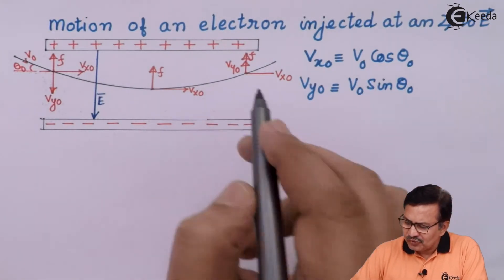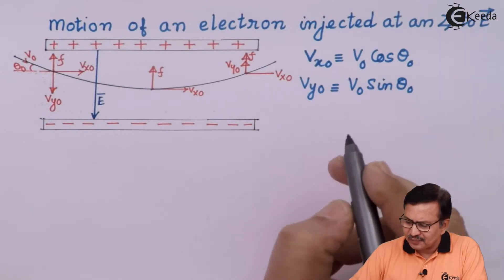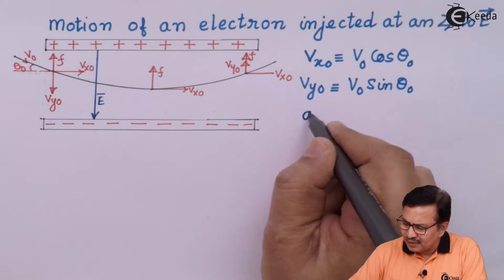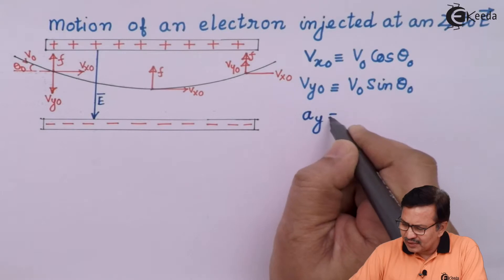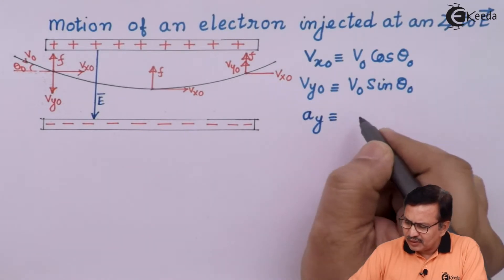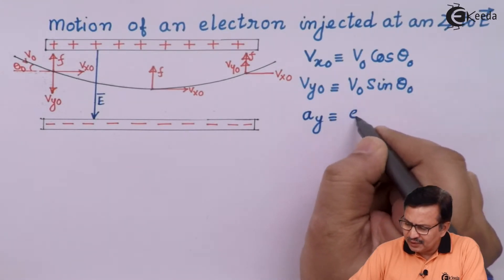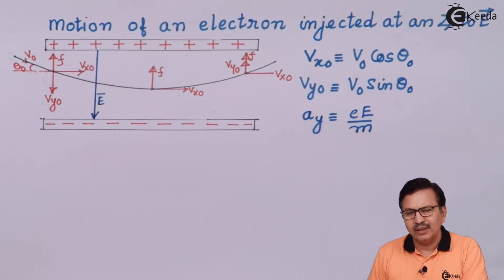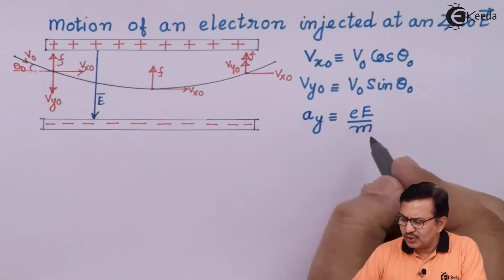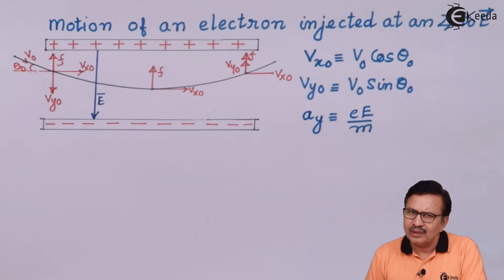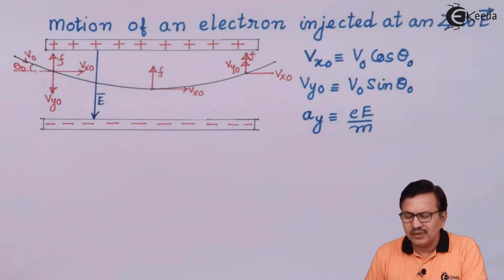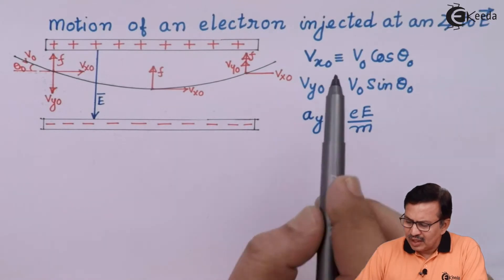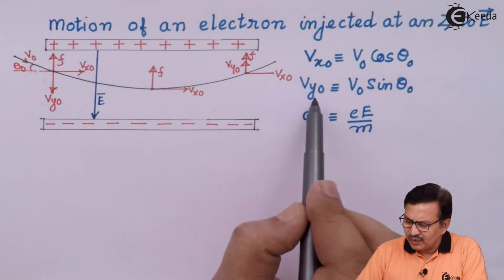Now let us calculate the acceleration. The acceleration ay is equal to the force acting on the electron divided by mass, which is eE/m. There is no acceleration in the x-direction.